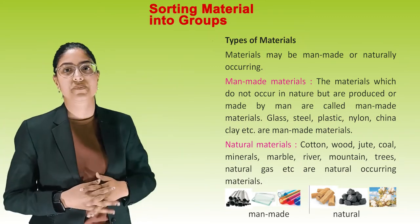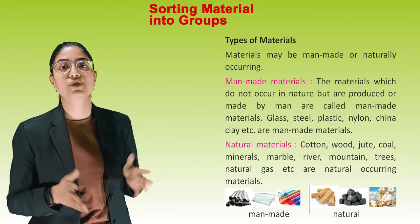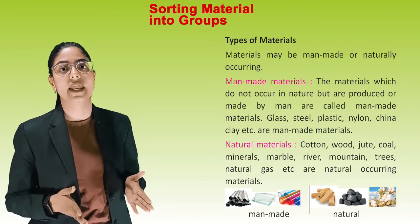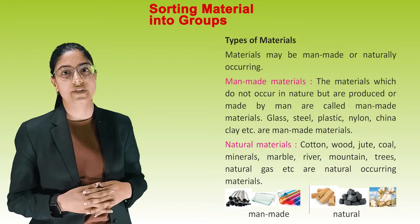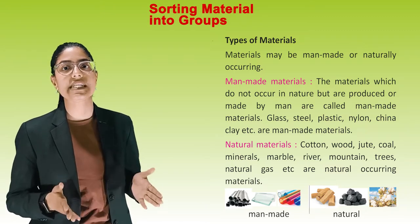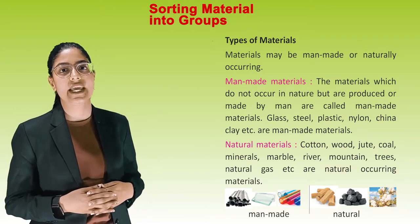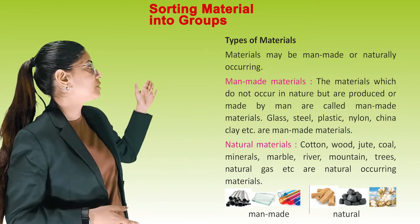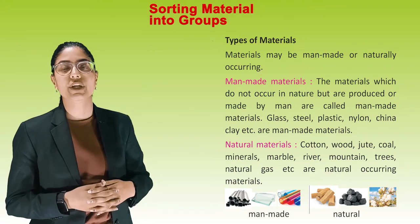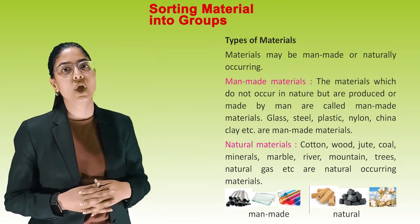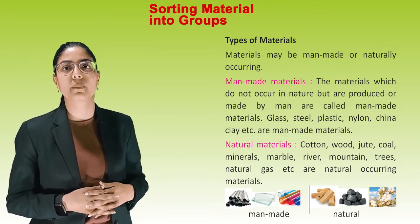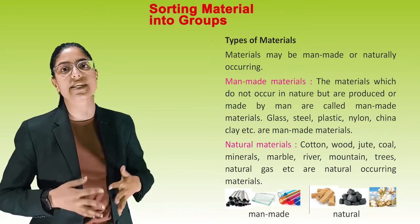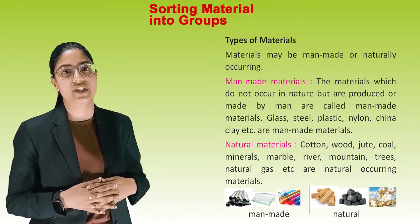Man-made materials are those which do not occur in nature but are produced or made by man. Glass, steel, plastic, nylon, china clay, etc. are man-made materials. Natural materials — cotton, wood, jute, coal, minerals, marble, river, mountain, trees, natural grass, etc. — are naturally occurring materials.